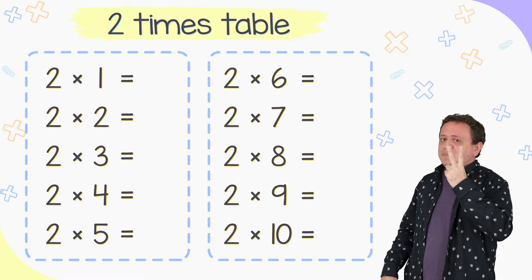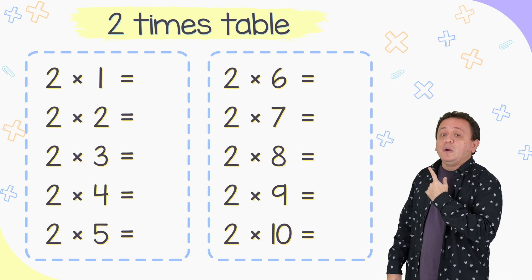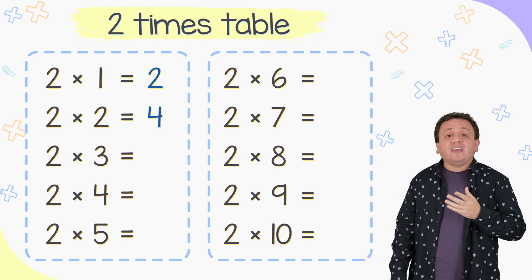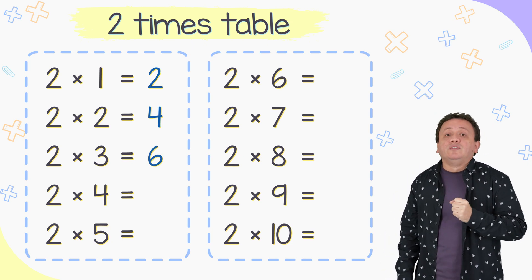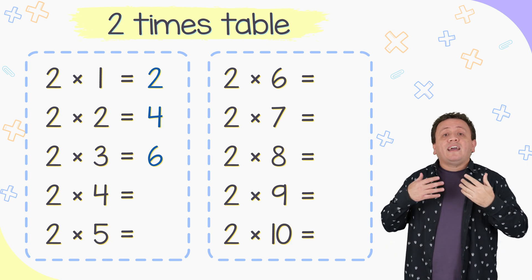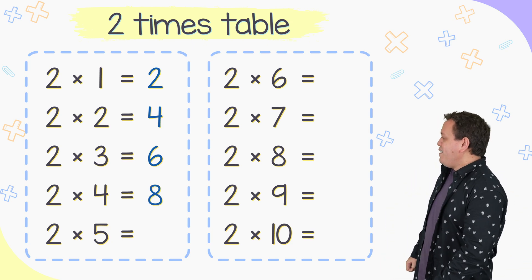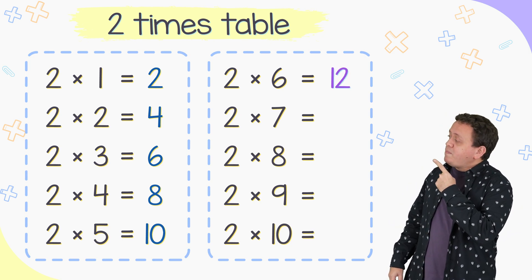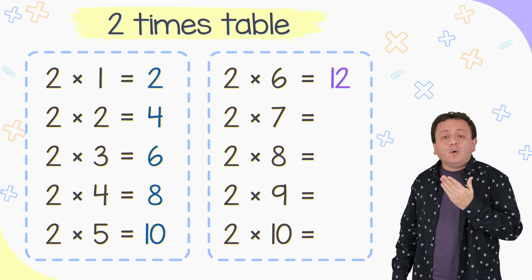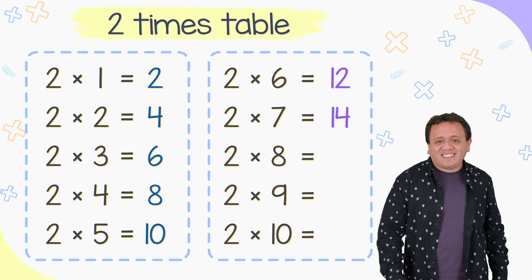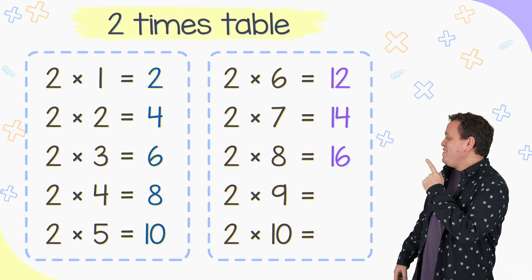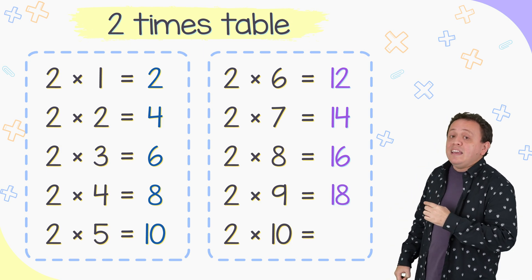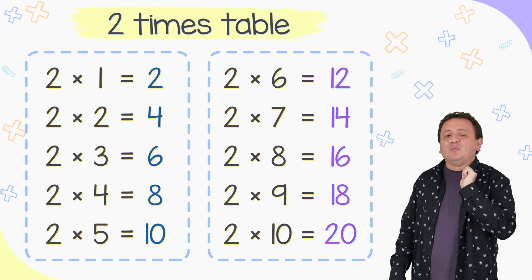Let's continue with the 2 times table. 2 times 1 equals 2. 2 times 2 equals 4. 2 times 3 equals 6. 2 times 4 equals 8. 2 times 5 equals 10. 2 times 6 equals 12. 2 times 7 equals 14. 2 times 8 equals 16. 2 times 9 equals 18. Finally, 2 times 10 equals 20.